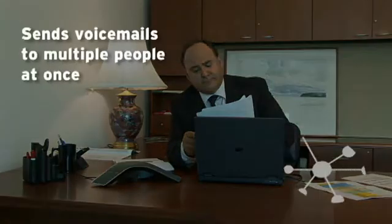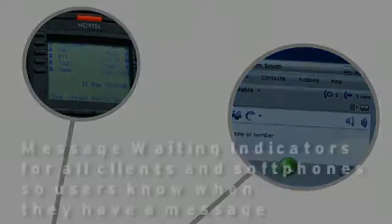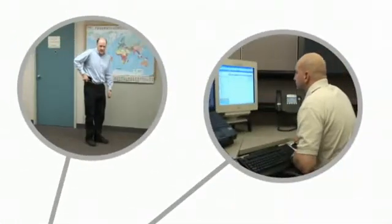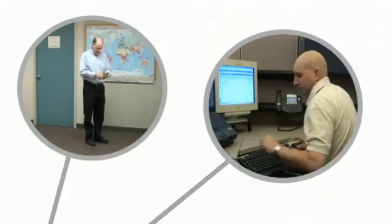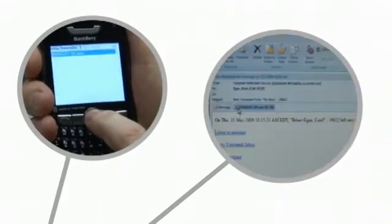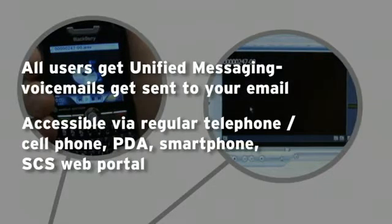With SCS, you can send voicemails to different group distribution lists at once. SCS clients and soft phones let you know when you have a voice message waiting for you. All users get unified messaging where your voicemails get sent to your email address at no extra charge.